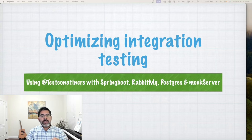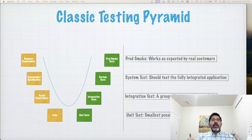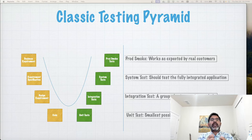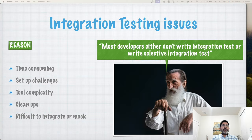Let's first understand why robust testing is crucial. This is the classical testing pyramid — here you can see how we move from requirements to code to different stages of testing. Today we'll focus on the integration test challenge and how we can use Testcontainers as your savior.